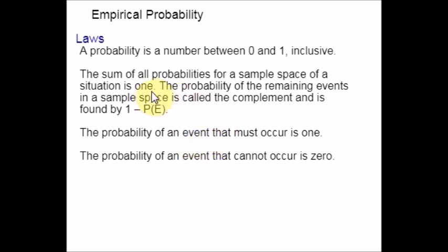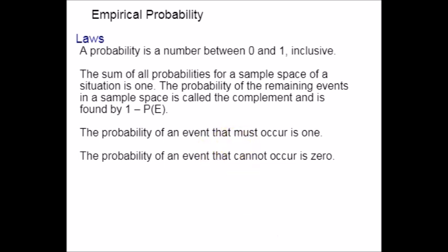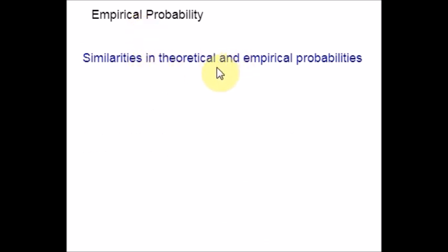Let us see the similarities between theoretical and empirical probability. The reason I am covering both in parallel is so you can understand them together, since theoretical probability is very basic. The answer for both can be written as fractions, decimals, or percentages. Both theoretical and empirical probabilities compare the desired outcomes to total outcomes — N(E) over N(S) — and both follow the laws of probability.